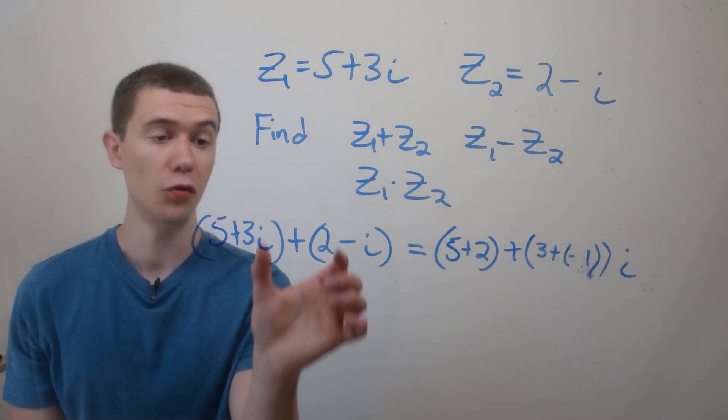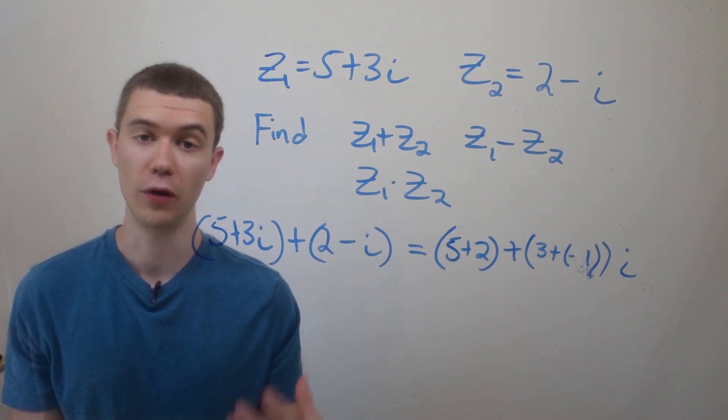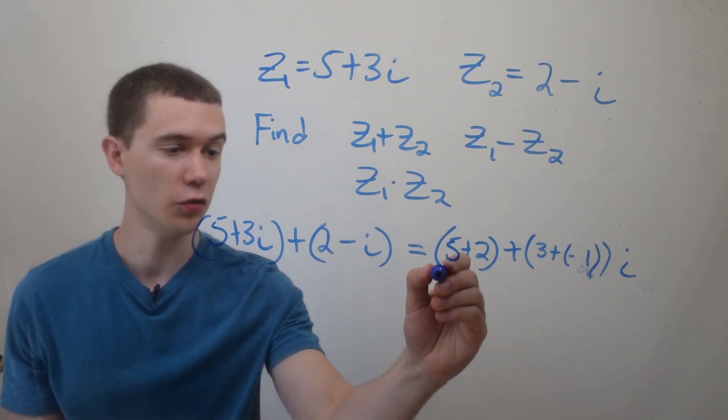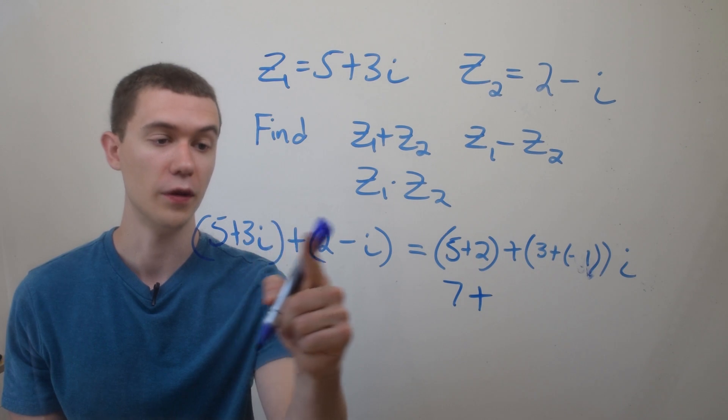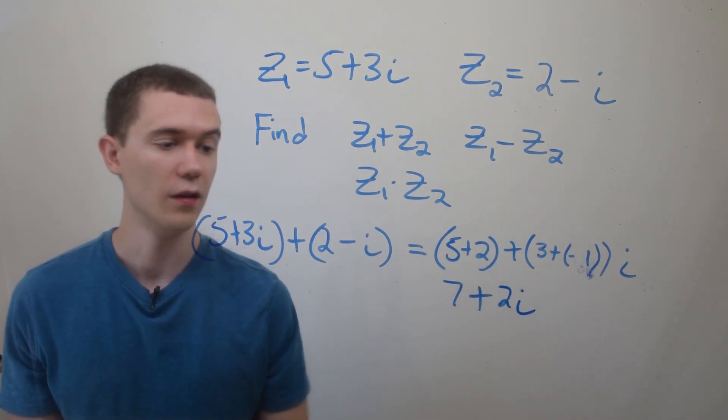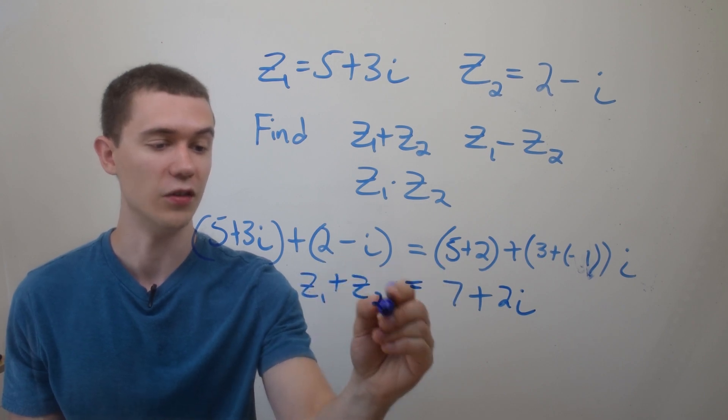So if I want to add these two imaginary numbers, I'll simply add up their real parts, and that'll be the new real part. And I'll add up the imaginary parts, that'll be the new imaginary part. So 5 plus 2 makes 7 is the new real part. I have 3 minus 1i, or rather 3 plus negative 1 will give me 2i. So this is our sum z1 plus z2.